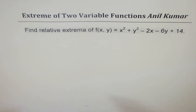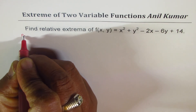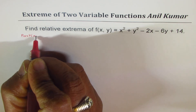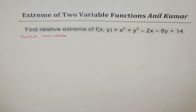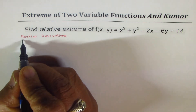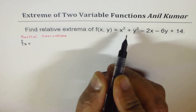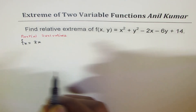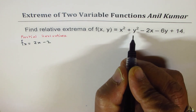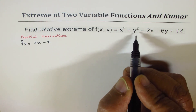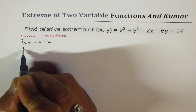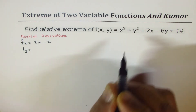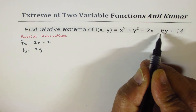The steps involved are: first, we take the partial derivatives. For the function f, the partial derivative with respect to x gives 2x minus 2, because y is treated as a constant and the derivative of y² will be 0. The partial derivative with respect to y is 2y minus 6.